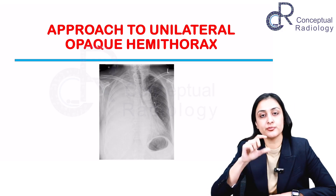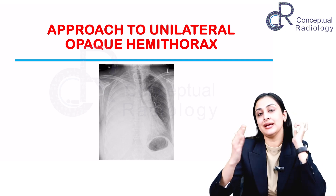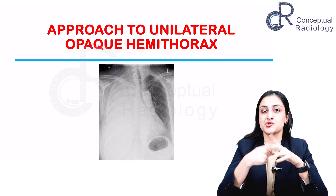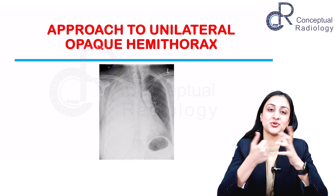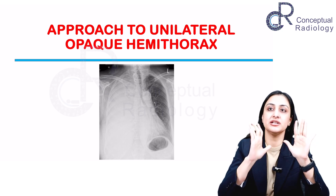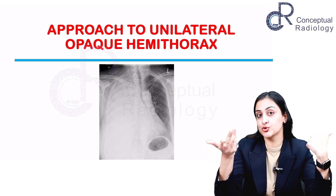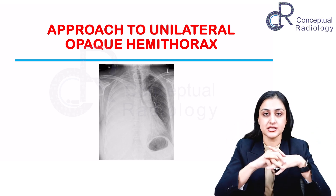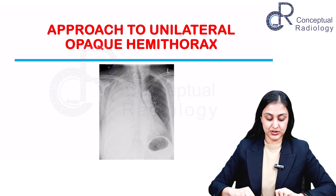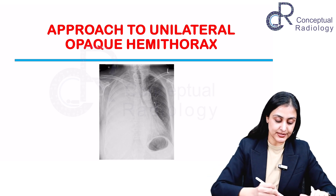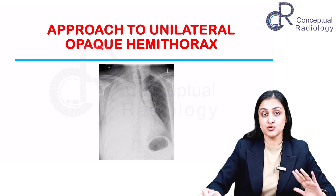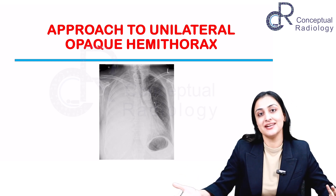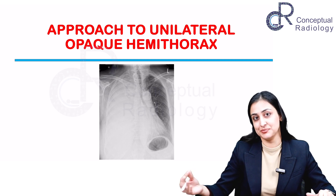Let's begin with the discussion of the approach to a unilateral opaque hemithorax. This is a very short and pretty straightforward topic. If this is the x-ray or the spotter you are getting, you are one of the lucky ones, because this is relatively straightforward when we compare it with the approach to a unilateral hyperlucent hemithorax.